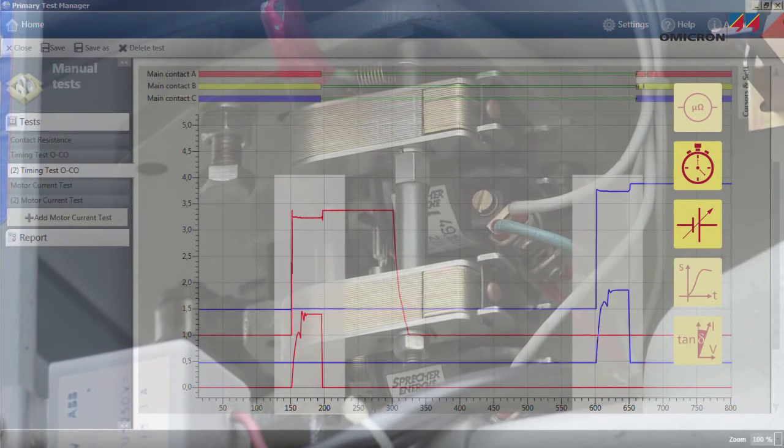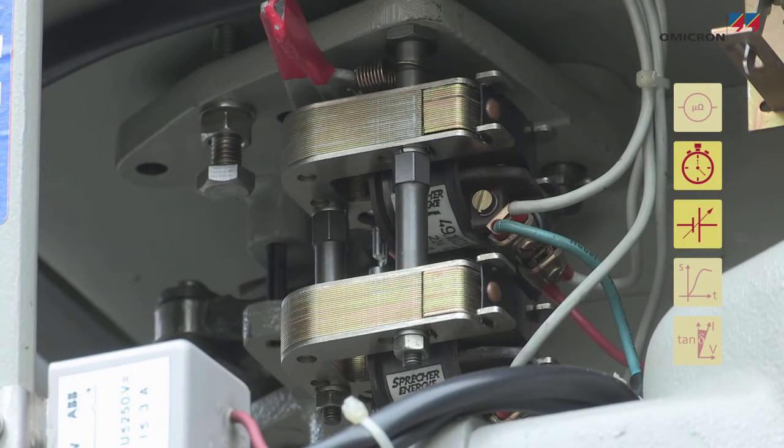Recording trip and close coil currents gives an indication of their mechanical and electrical condition, as well as the condition of the latch.